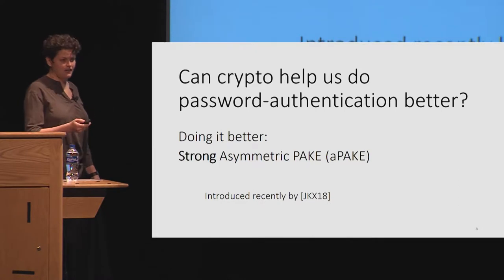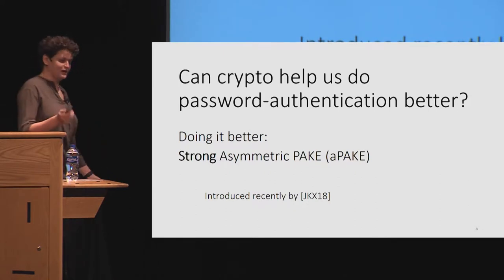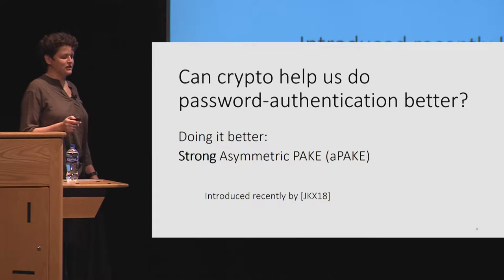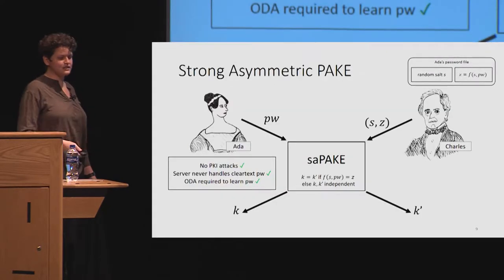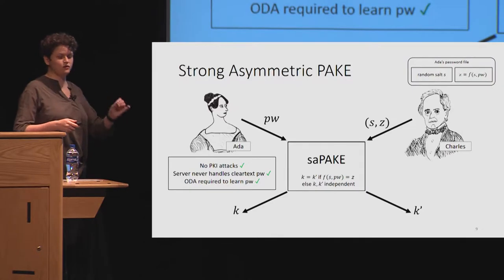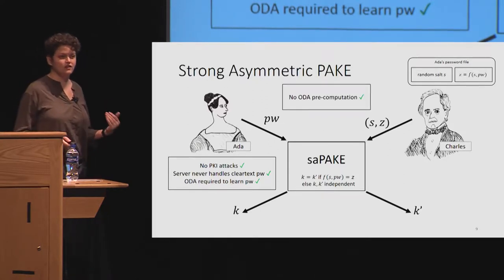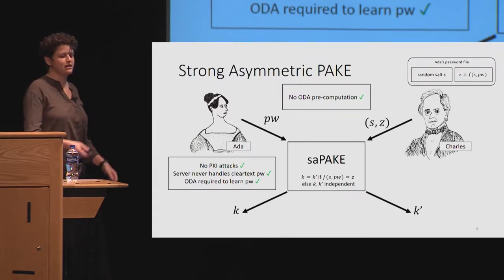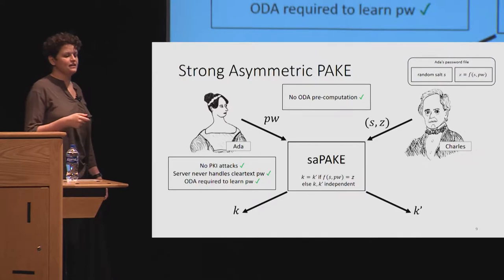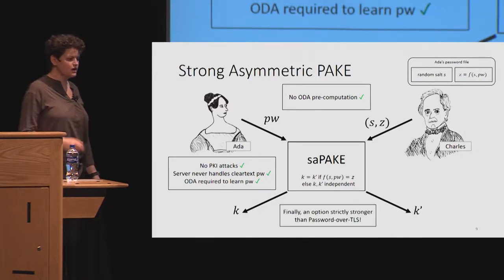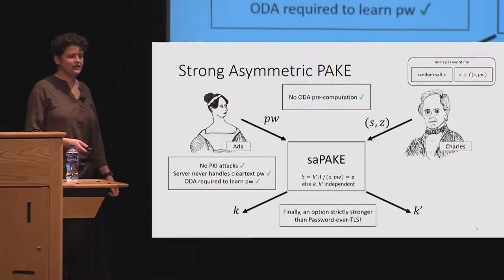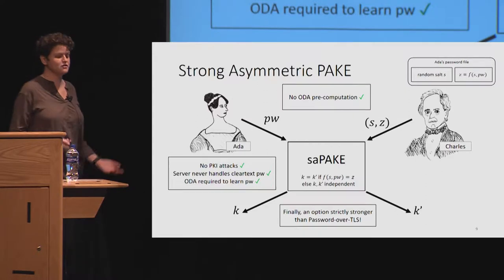And this is where we have strong asymmetric PAKE, recently proposed at Eurocrypt by my advisor and colleagues in 2018. Instead of holding a regular unrandomized function, we use a randomized function — we add a random salt. Now we get the benefit that there is no possibility of offline dictionary attack pre-computation, because the salt is per user and not known beforehand. So finally we are able to use crypto and get all the benefits of password over TLS but none of the shortcomings.